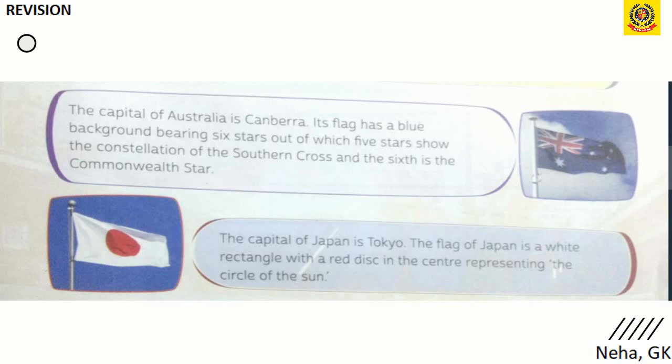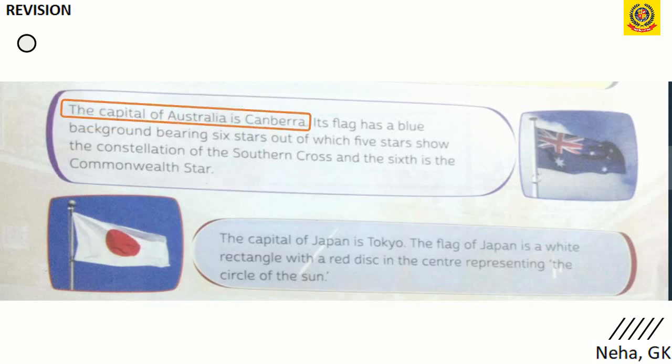The capital of Australia is Canberra. Its flag has a blue background bearing six stars, out of which five stars show the constellation of the Southern Cross, and the sixth is the Commonwealth Star.